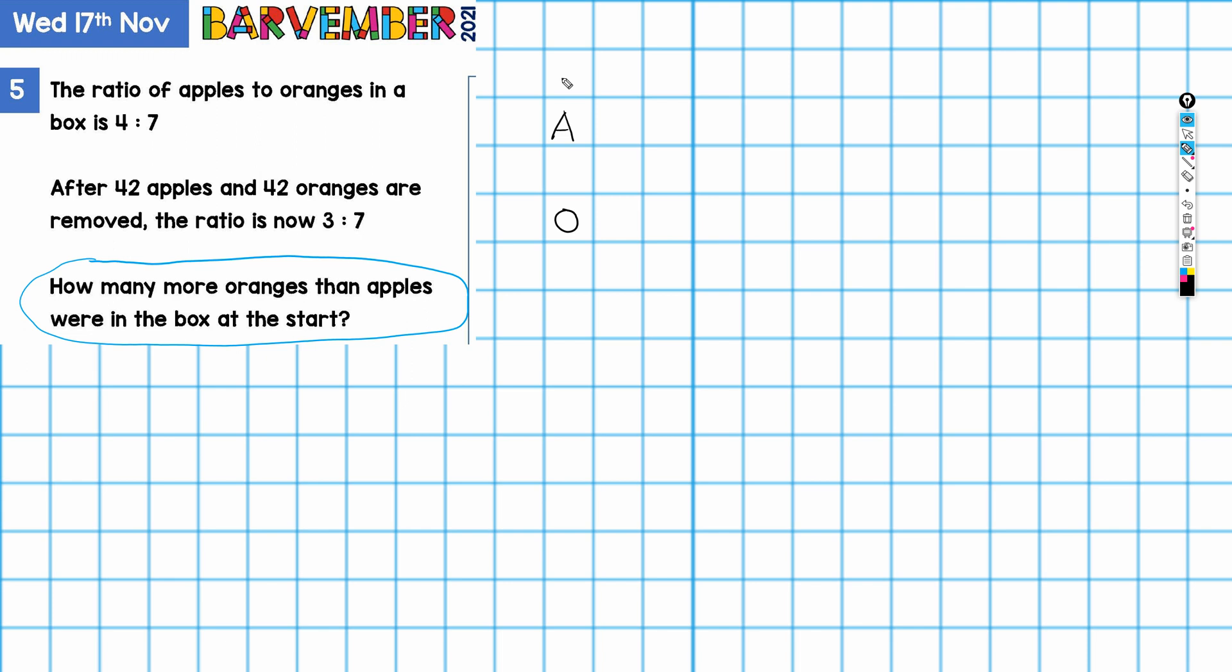And the ratio at the beginning is four to seven. And I might use my thicker pen just for this. So there we go. So what have we got? One, two, three, four.